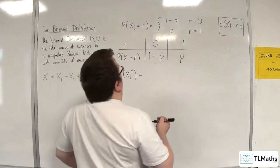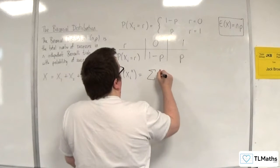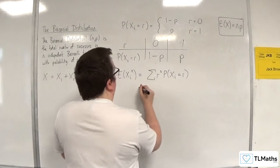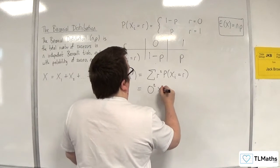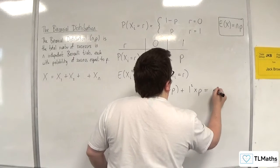That would be the sum of each of the r squareds times their respective probabilities. So we'll have 0² times (1-p) plus 1² times p, and of course that's just p.